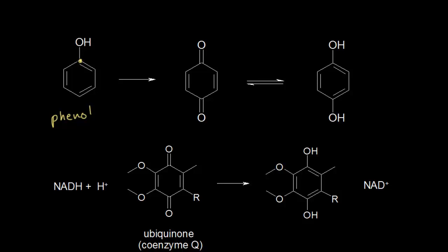There are many ways to oxidize phenols. Something like the Jones reagent — with sodium dichromate, sulfuric acid, and water — would be capable of oxidizing phenol to this molecule over here on the right, which we call benzoquinone. You can see that this carbon right now has two bonds to oxygen, so it has been oxidized. So phenol can be oxidized to benzoquinone using numerous organic reagents.